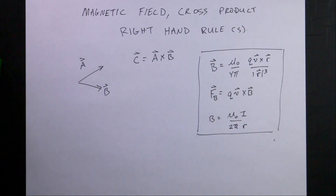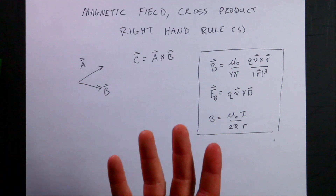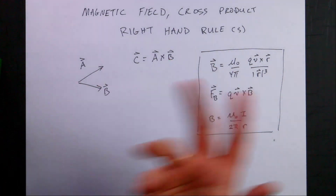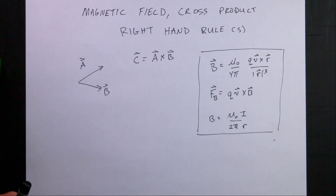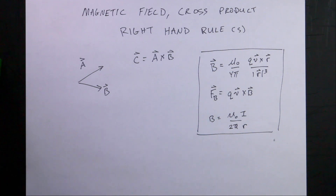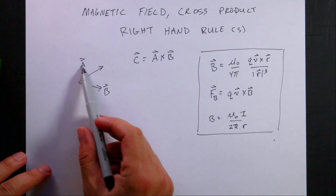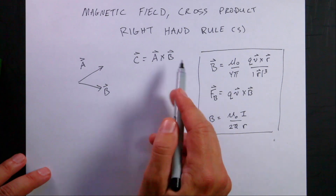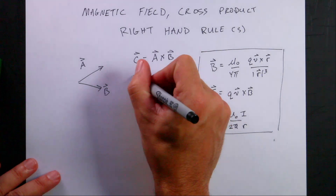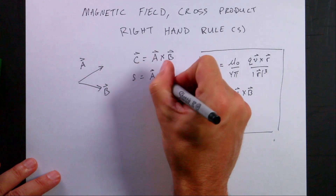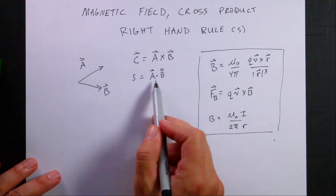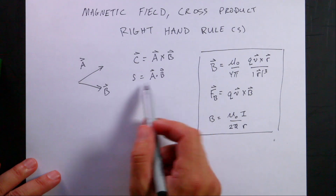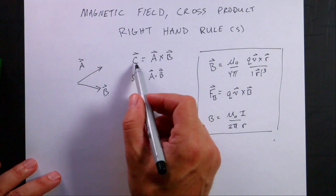A vector is a quantity that has essentially three components — an x, y, and z component — so it's an arrow in three dimensions. You can't multiply vectors by each other because multiplication is reserved for scalar quantities, but there are two operations you can do. One is a cross product: the vector c equals a cross b. There's also the dot product: s equals a dot b, which returns a scalar value. Use the dot product for work and electric potential. The cross product returns a vector value.